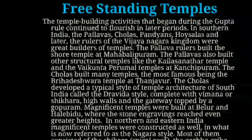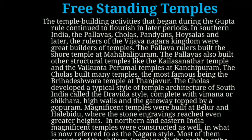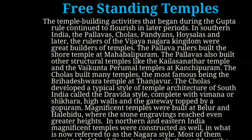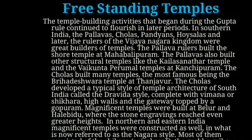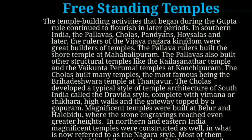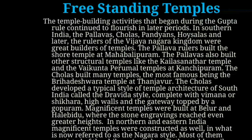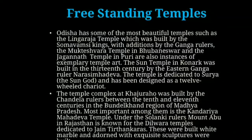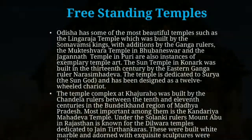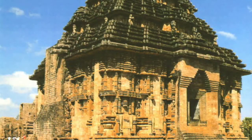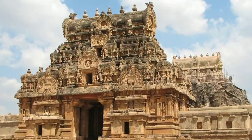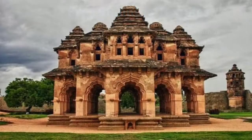In Northern and Eastern India, magnificent temples were constructed in what is referred to as the Nagara style. Most of them consisted of the Shikhara, meaning a spiral roof, the Garbha Griha, which is the sanctum, and the Mandapa, which is a pillared hall. Odisha has some of the most beautiful temples, such as the Lingaraja temple built by the Somavamshi kings. With additions by the Ganga rulers, the Mukteswar temple in Bhubaneswar and the Jagannath temple in Puri are also instances of exemplary temple art.